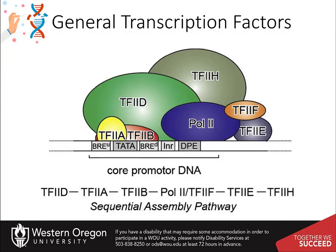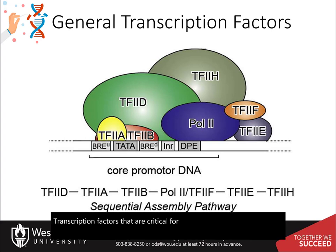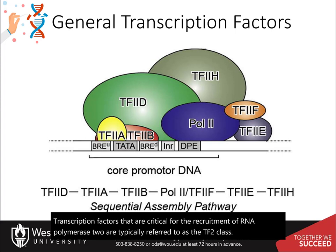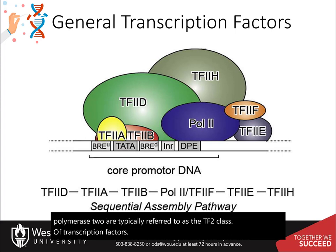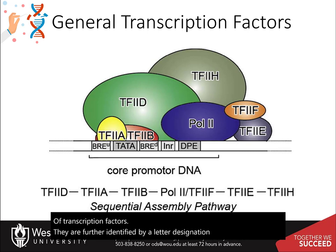Transcription factors that are critical for the recruitment of RNA polymerase II are typically referred to as the TF2 class of transcription factors. They are further identified by a letter designation: A, B, C, D, and so on.